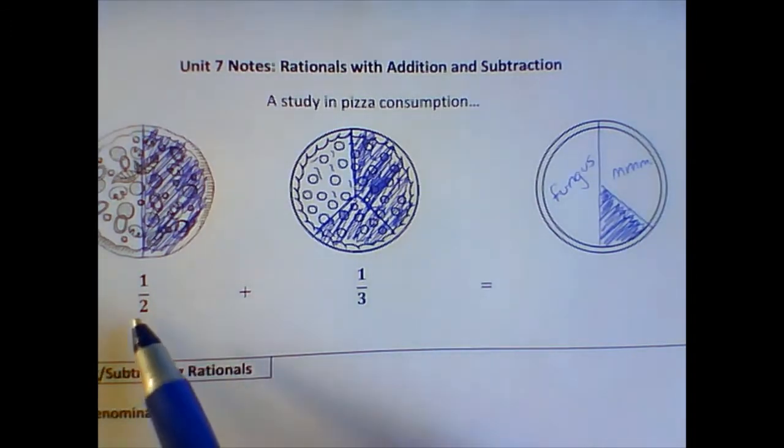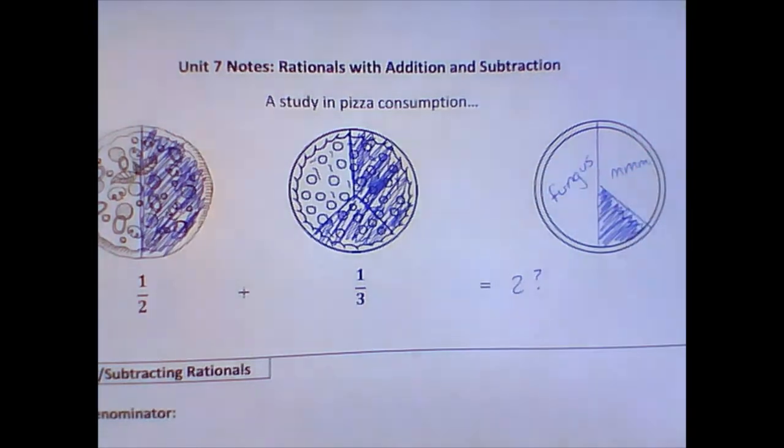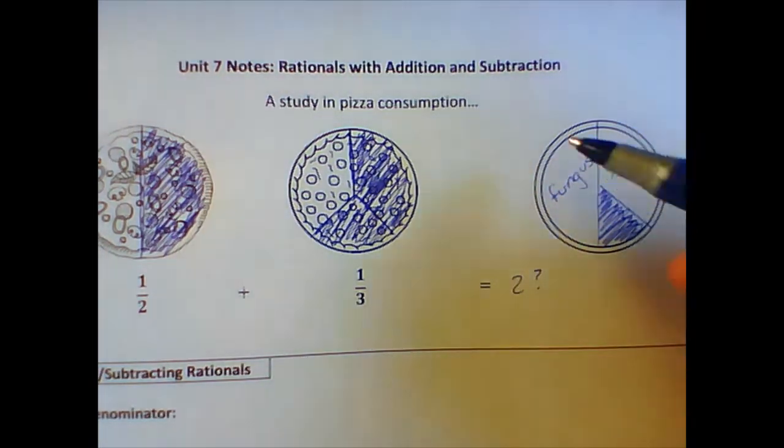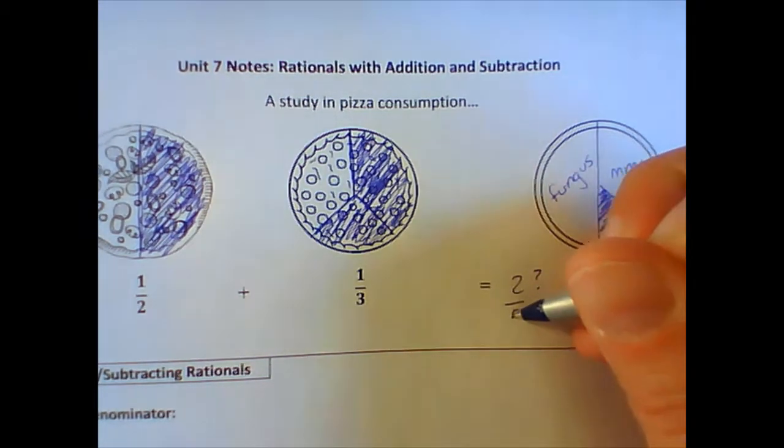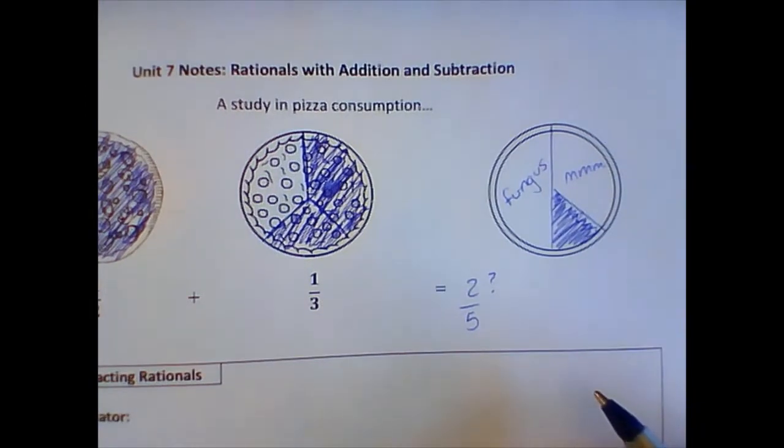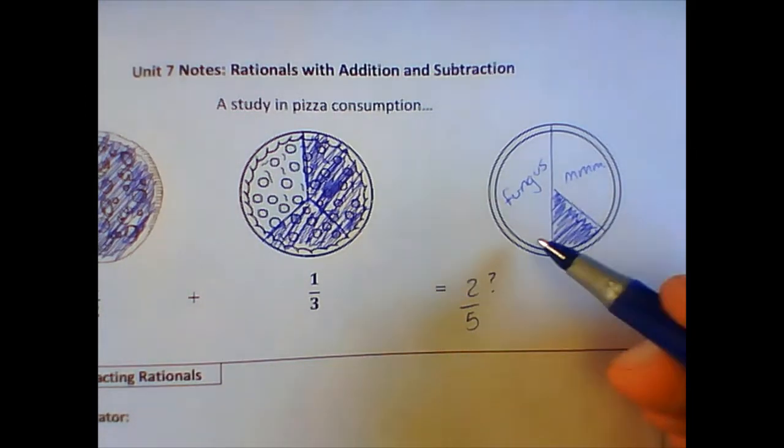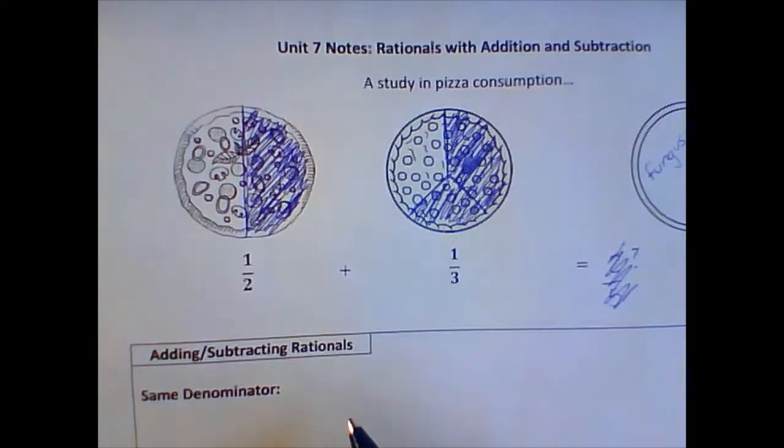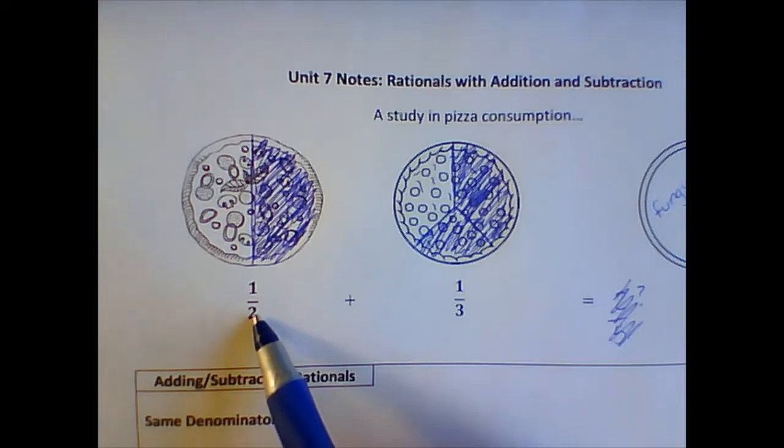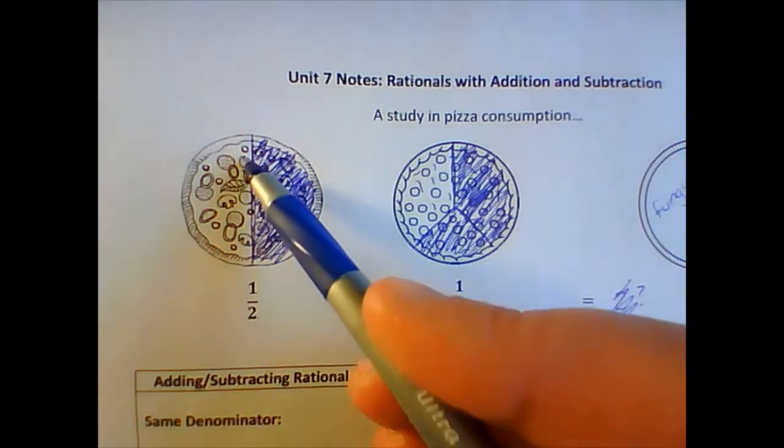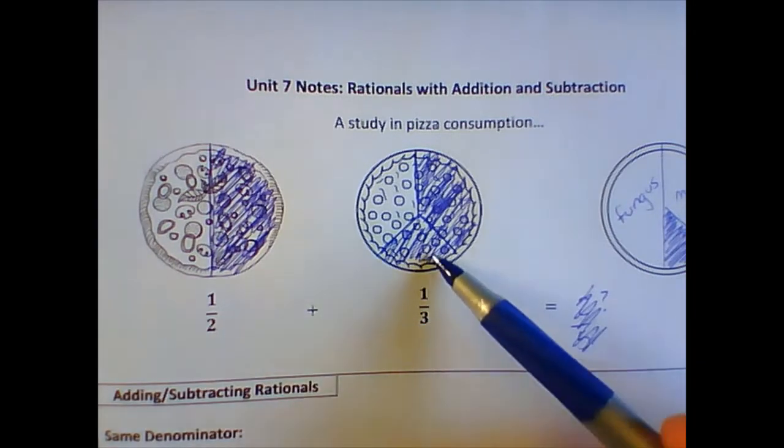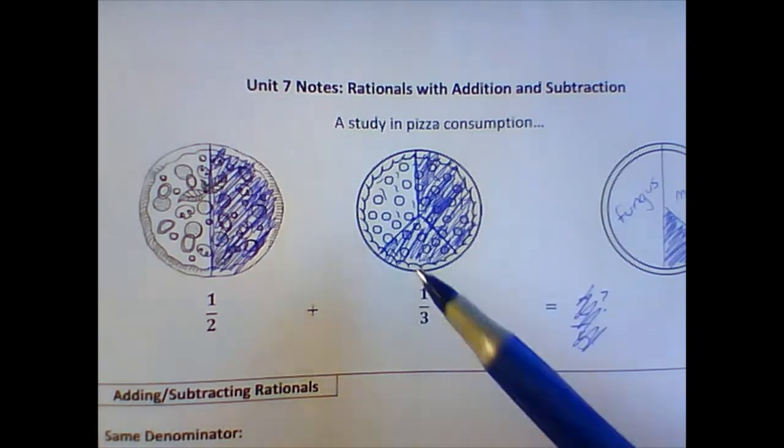So we have both pizzas on now the same pizza dish. The fungus and the mmm pizza. So how much of this dish is covered in pizza? Well, in theory, we could just add it up. One-half plus one-third is two. Well, we have two pieces on there, but that doesn't tell us how much of the dish is. There's a whole circle here. It's not two. Maybe we can add the bottom. Two plus three is five. Okay, here's the problem. Two-fifths is less than half. There's more than half of that covered. So this is why adding fractions can be cumbersome.